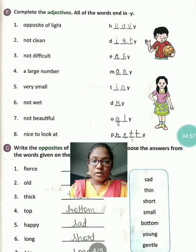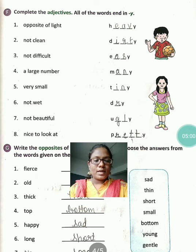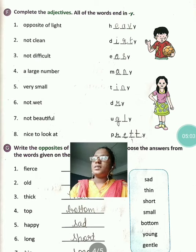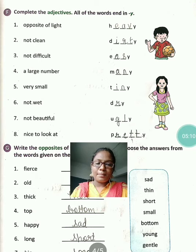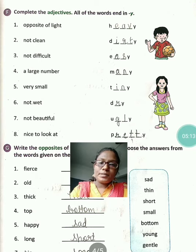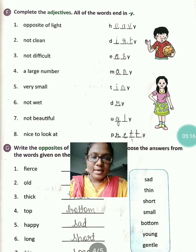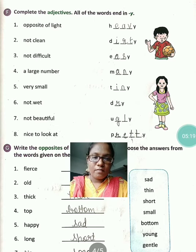Opposite of light kya hoga? Heavy. Matlab, jo packet aap lete hain woh heavy hota hai. Heavy ka opposite kya hota hai? Light — halka hai. So opposite of light hoga heavy. Spelling kya hai? H-E-A-V-Y.